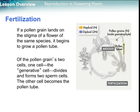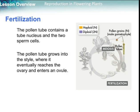Let's check fertilization. Haploid cells have one set of chromosomes, while diploid cells have two sets. If a pollen grain lands on the stigma of a flower of the same species, it begins to grow a pollen tube. The generative cell divides to form two sperm cells, and the other cell becomes the pollen tube. The pollen undergoes mitotic cell division to form two cells; one becomes the pollen tube and the other remains the pollen. The pollen tube contains a tube nucleus and two sperm cells, and it grows into the style until it eventually reaches the ovary and enters the ovule.